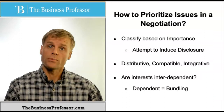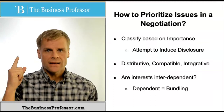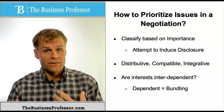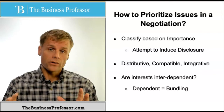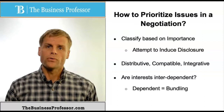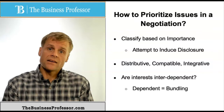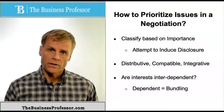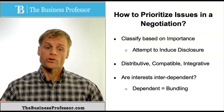To rehash: first, prioritize issues based upon importance to you or the other party, if you can identify that. Second, identify whether they're distributive, compatible, or integrative, so you can use them strategically and bundle them together to work towards an achievable outcome. Third, identify whether any of the interests are interdependent, and combine or bundle those together to move towards a potential agreement on the collective group of interests, rather than taking each interest individually.